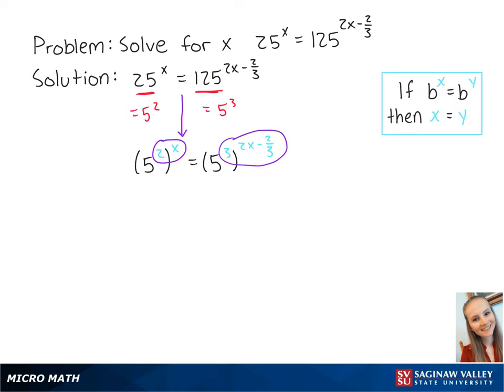If we multiply the exponents, we get 5 to the 2x equals 5 to the 6x minus 2. Now that 2x and 6x minus 2 share the same base of 5,